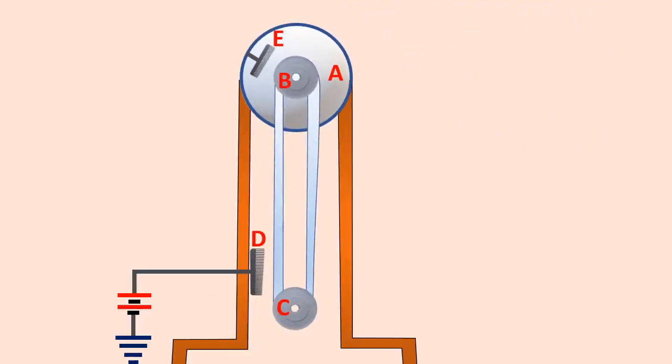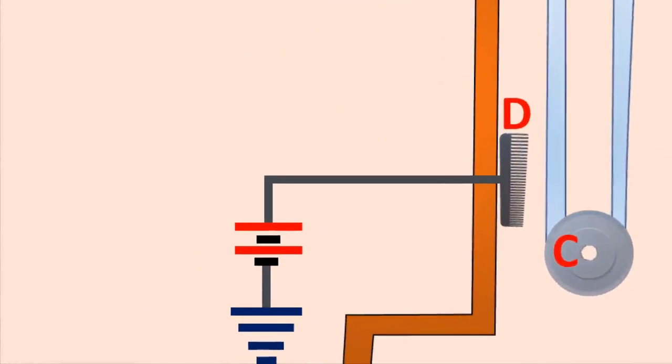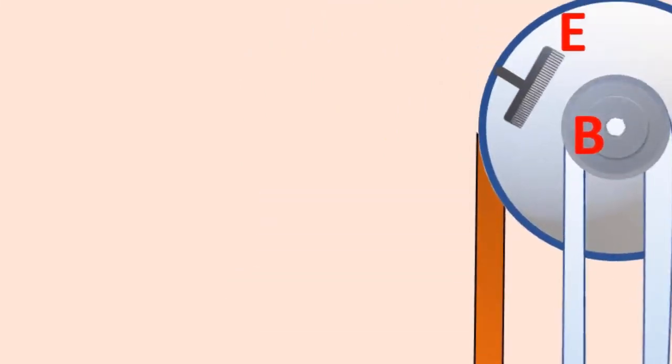The lower comb D is maintained at a positive potential of 10 power 4 volt by a power supply. The upper comb is connected to the inner side of a hollow metallic sphere.